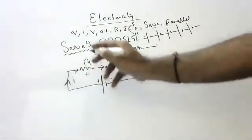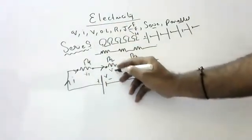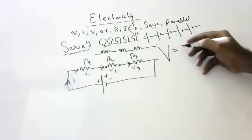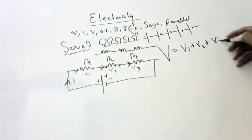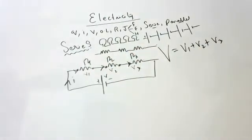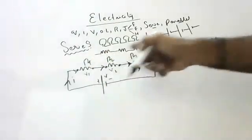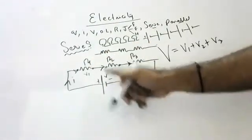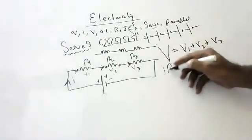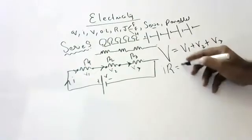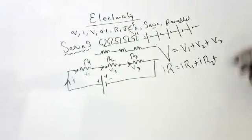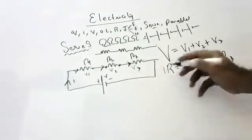V is shared as V1 across R1. V is shared as V2 across R2. V is shared as V3 across R3. Total potential is equal to V1 plus V2 plus V3. Whatever potential the battery is supplying, the three of them are sharing. According to Ohm's law, V = IR. So V1 = IR1, V2 = IR2, and V3 = IR3.